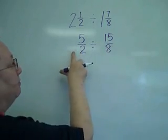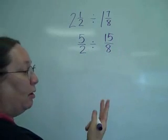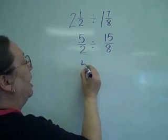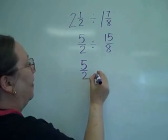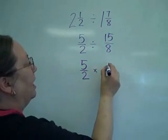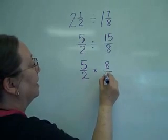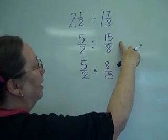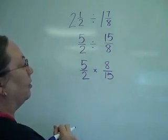I now have a top and a bottom, top and a bottom, so now I'm ready to flip it over. I leave the first one alone, change it to times, and flip the second one over so I can multiply by the reciprocal.